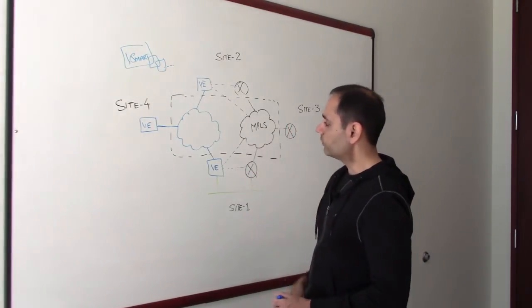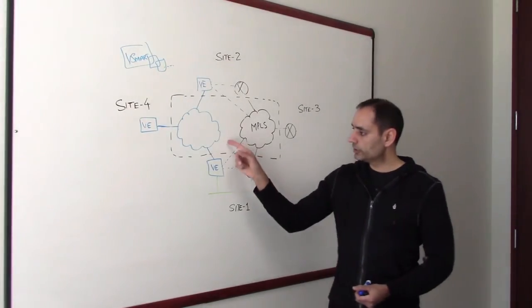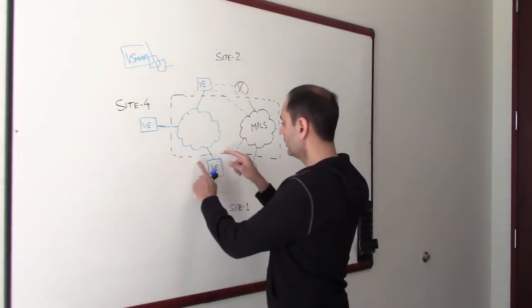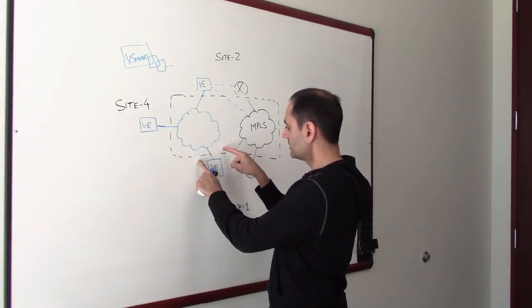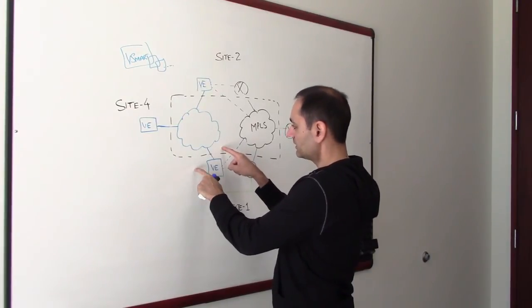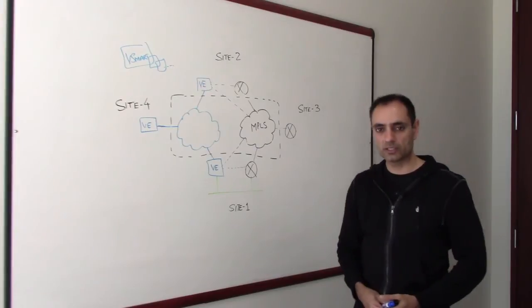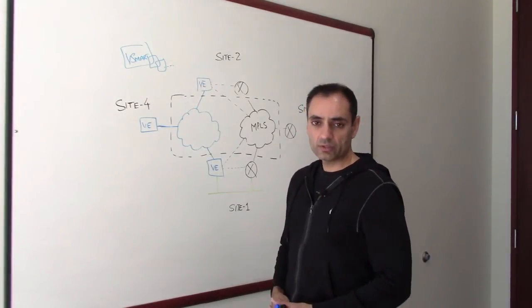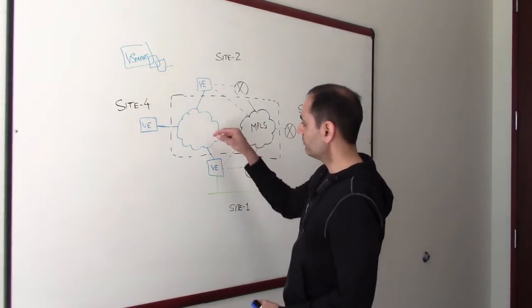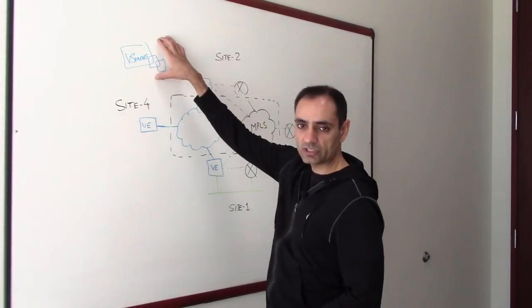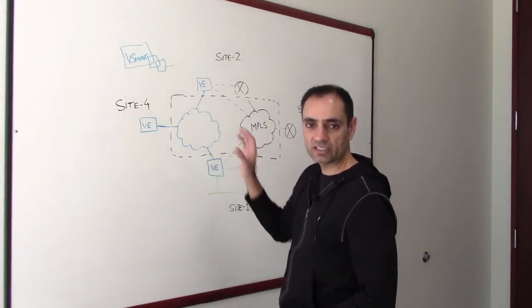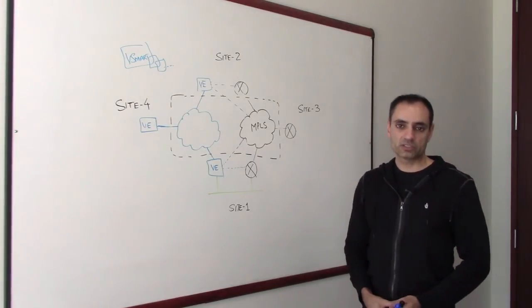And why would you do the overlay or orchestrate the overlay on both transports? Well, one of the reasons could be that you would like to measure the performance characteristics of each of the transports. You may want to use the performance characteristics to do certain things such as application-aware routing. You can refer to my other video on application-aware routing for details. But primarily, in brief, you can define policies on the controller, on the centralized controllers, and you can have certain type of application traffic take a certain transport based on the performance requirements.